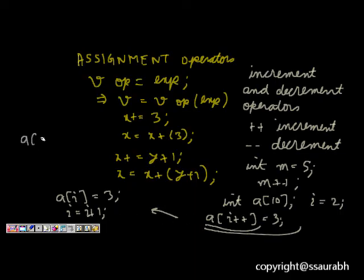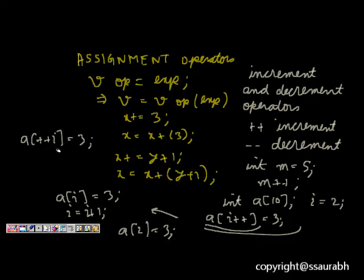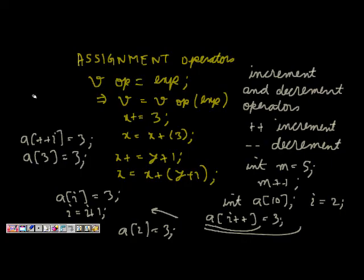If we use pre-increment, ++i, then a[++i] = 3 means a[3] = 3 — the index is incremented before use. Similarly for decrement: a-- decrements a after the line executes, while --a decrements a before execution.